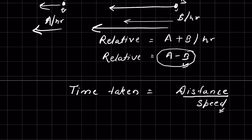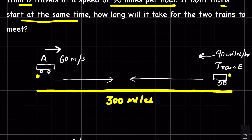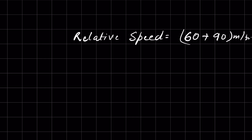Now, these two trains are traveling towards each other, which means their relative speeds will add, since it will take much less time. So the relative speed will be 60 plus 90 miles per hour, which equals 150 miles per hour.